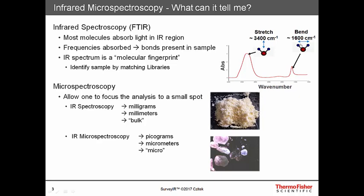The infrared spectrum is very specific. It is a molecular fingerprint of a molecule and we can identify unknown samples by searching against libraries of spectra of known materials. Microspectroscopy extends FTIR spectroscopy into the micro domain. In infrared spectroscopy, we measure mass on the scale of milligrams and length on the scale of millimeters, and it is a bulk method. By coupling beam condensing optics and sample isolation optics, we can extend spectroscopy into the micro domain, where we measure mass on the scale of picograms and length on the scale of micrometers.